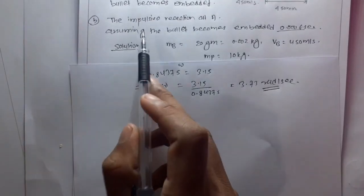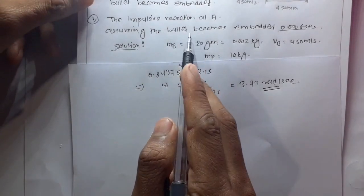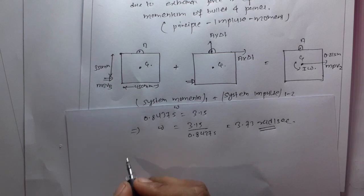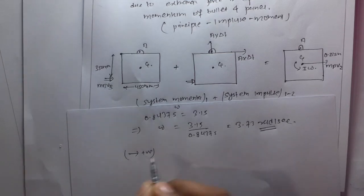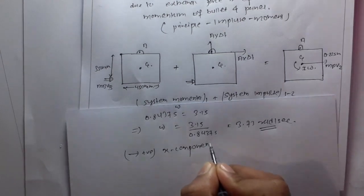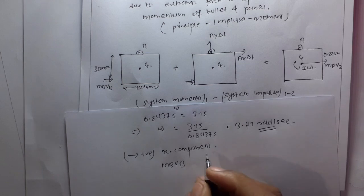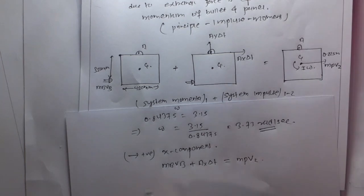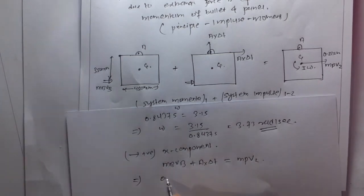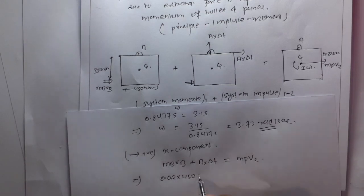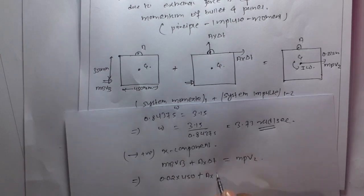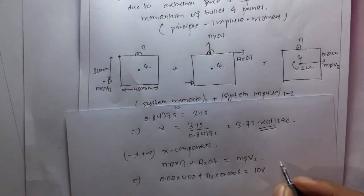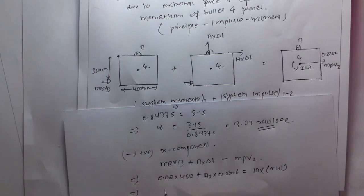Now to find the impulse reaction at A, assuming the bullet becomes embedded in 0.006 seconds. Taking the positive x component: mb times vb plus Ax times delta t is equal to mb times v2.